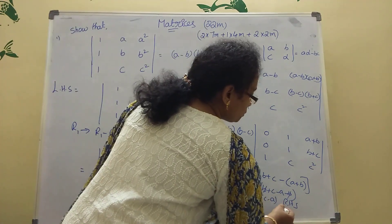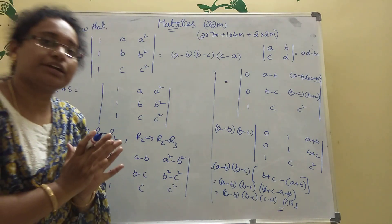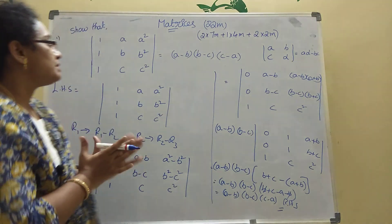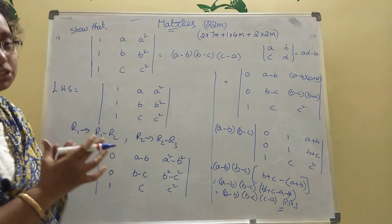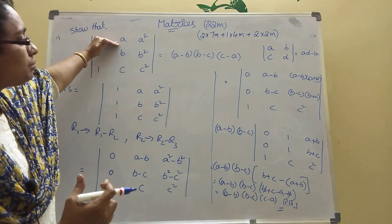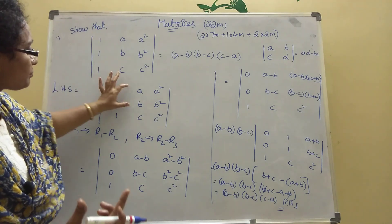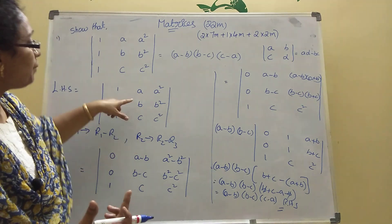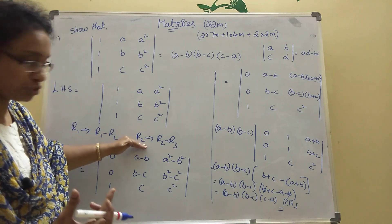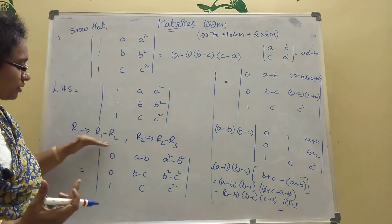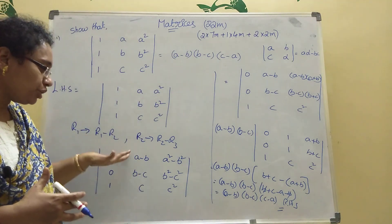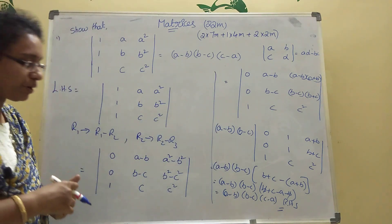Expanding: (b+c) − (a+b) = b + c − a − b = c − a. So the overall answer is (a−b)(b−c)(c−a), which is the RHS. That is easy — don't forget and don't lose the marks. To summarize: ones are present, so convert two of them to zero using R1 − R2 and R2 − R3 to get the (a−b) and (b−c) terms. The third term (c−a) comes automatically from the third row. Got it?